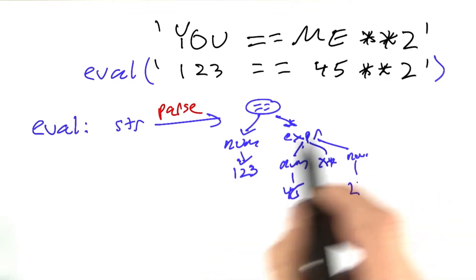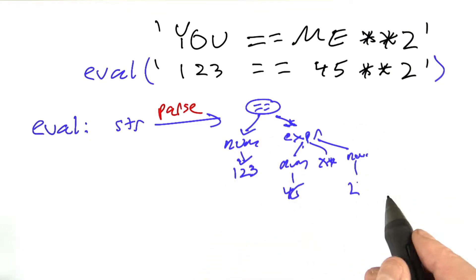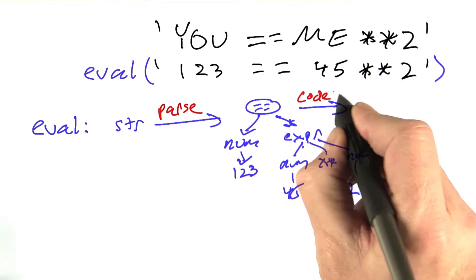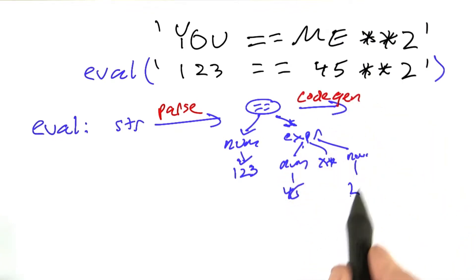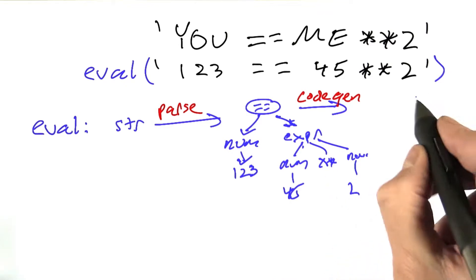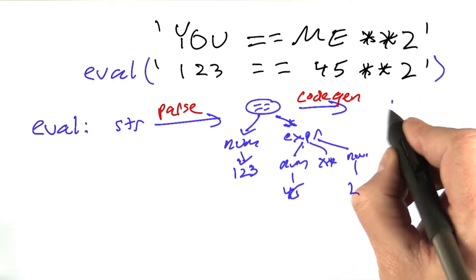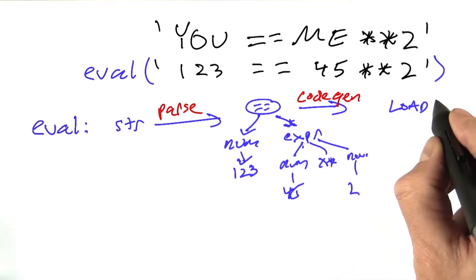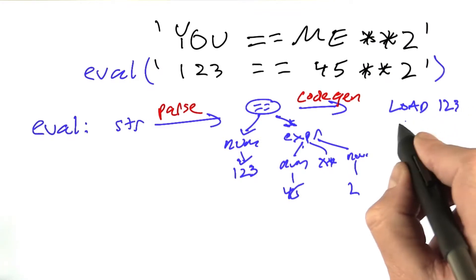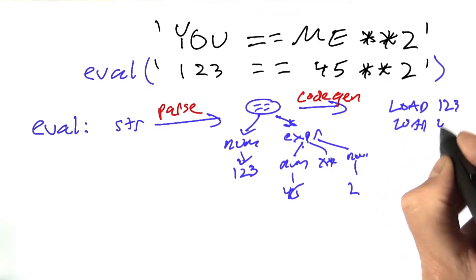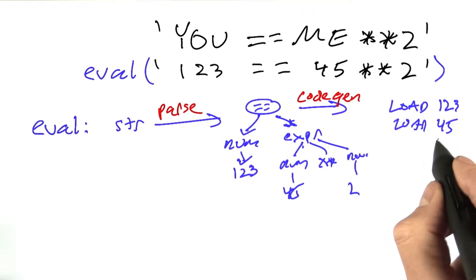Python builds up a data structure that looks something like that. There's another operation of code generation in which Python takes this tree and says, in order to evaluate this tree, I'm going to do something like load the number 1, 2, 3, and then load the number 45, and then do an operation on that, and so on,